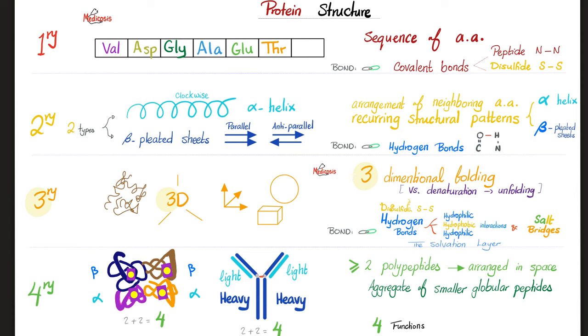Last, quaternary structure. Two plus two is four. Two alpha chains and two beta chains in hemoglobin, and two light chains, two heavy chains of the immunoglobulin. The quaternary structure has, guess what? Four functions, as we'll discuss soon.